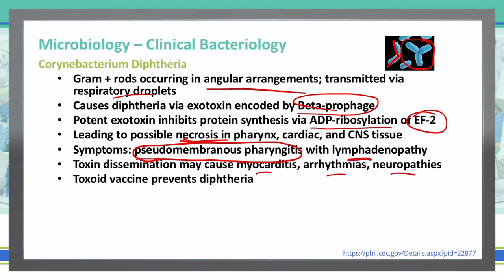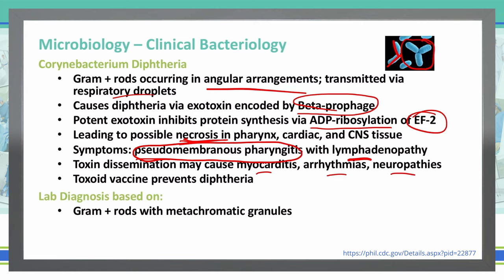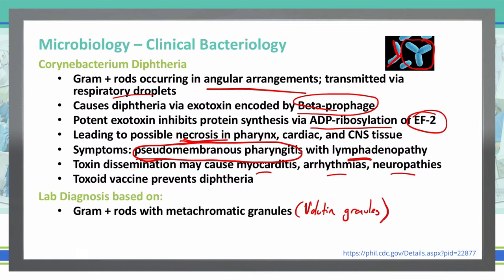To diagnose Corynebacterium diphtheriae, we look for gram-positive rods with metachromatic granules, also known as volutin granules. A volutin or metachromatic granule is an intracytoplasmic storage form of inorganic polyphosphate. It gives a metachromatic effect — when we stain with methylene blue, the granules will appear red, so staining it with blue makes them appear red.